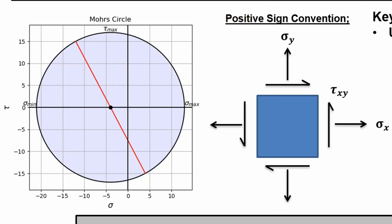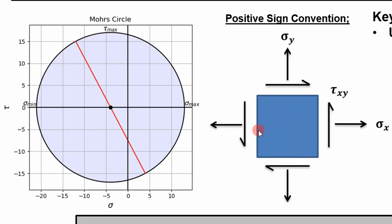The sign convention used in this analysis is the positive sign convention. The positive x-face and positive y-face are shown here. On a positive surface, if the shear stress points in a positive coordinate direction — in this case the positive y-direction — that equals a positive shear stress. On the negative x-surface, the shear stress vector points down in the negative y-direction, so negative times negative equals positive. These are all positive shear stresses, but the only one you really need to worry about is the one on the positive x-face.